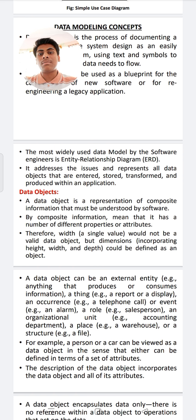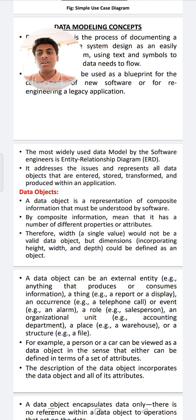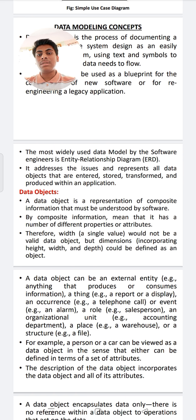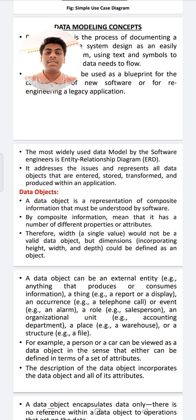First of all, data objects. Data objects represent composite information that must be understood by the software. Composite information means it has a different number of properties or attributes. Properties are nothing but characteristics, and attributes are nothing but fields of a table. Any fields in a table are called attributes. Therefore, a single value like width alone would not be a valid data object, but dimensions incorporating height, width, and depth can be defined as an object.